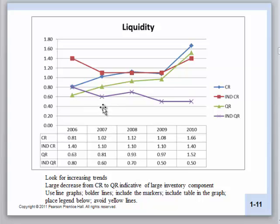Make sure you use line graphs with markers. Always do this in the same order — company ratio, industry ratio, company ratio, industry ratio. If you do that, the colors will stay sequential throughout the program and it will be easier for the reader to follow, because you start to look for colors rather than re-reading each legend. It just makes it easier for the reader.